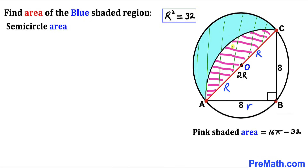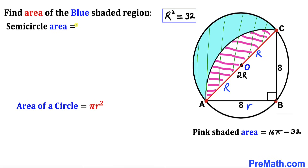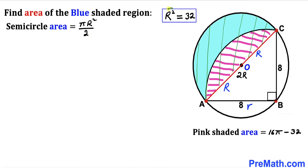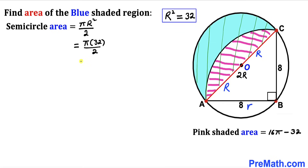Next, let's calculate the semicircle area whose radius is uppercase R. The area of a full circle is π R², and since we are dealing with a semicircle we divide by 2. Our R² value is 32, so this becomes π times 32 divided by 2, giving a semicircle area of 16π square units.